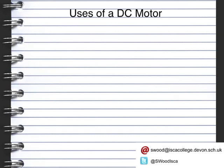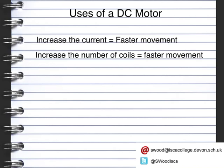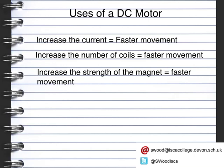When we use a DC or direct current motor, we need to ensure that we use a rectangular coil as we've seen in the previous pictures. It then rotates. You can change the speed or how much it's rotating by three ways: increase the current for faster movement, increase the number of coils for faster movement, and increase the strength of the magnet or the magnetic field for faster movement.